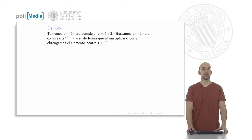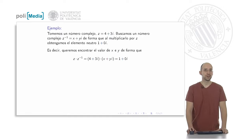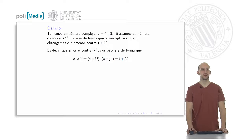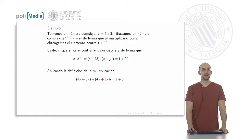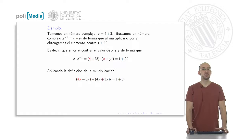The property the inverse must satisfy is simply that multiplying four plus three i by the inverse x plus yi must result in one plus zero i. That is the equation shown on screen that must be verified in order to isolate x and y.